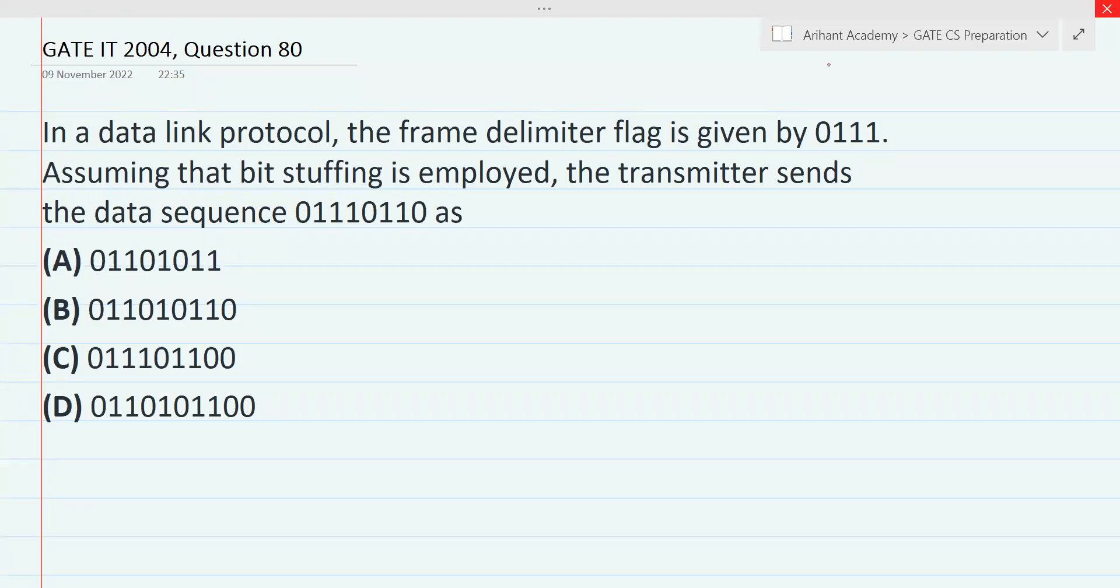Hello everyone, in this video we are going to see the GATE IT 2004 question number 80, a very interesting question on framing. The question is: In a data link protocol, the frame delimiter flag is given by 0111. Assuming that bit stuffing is employed, the transmitter sends the data sequence 01110110 as - so this is our input string.